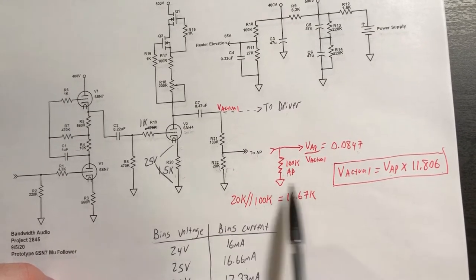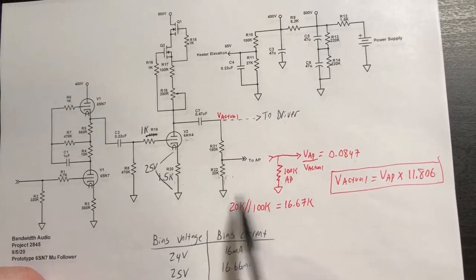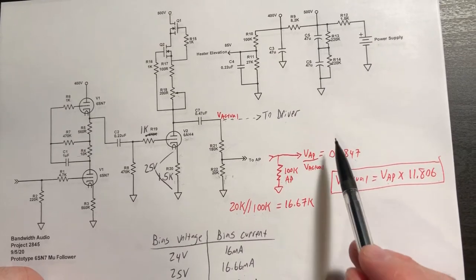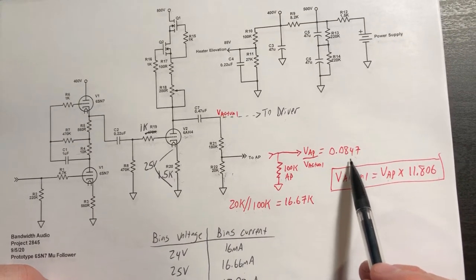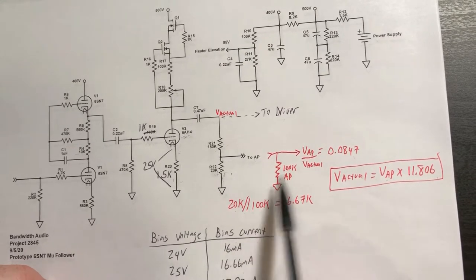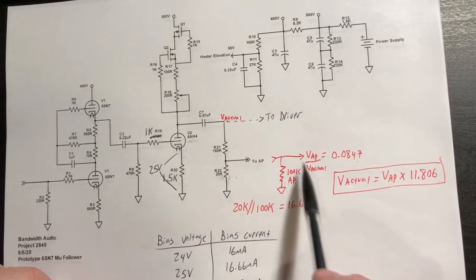that parallel equivalent resistance ends up reducing our voltage divider to not a 10 to 1 or 0.1, but rather 0.0847. So basically this voltage divider is a little less than 10 to 1 due to the loading of the AP.